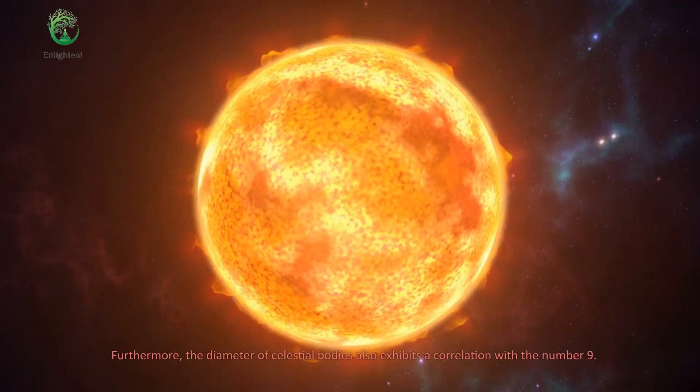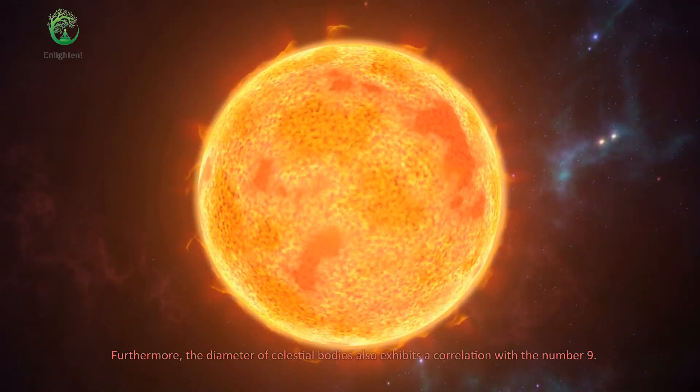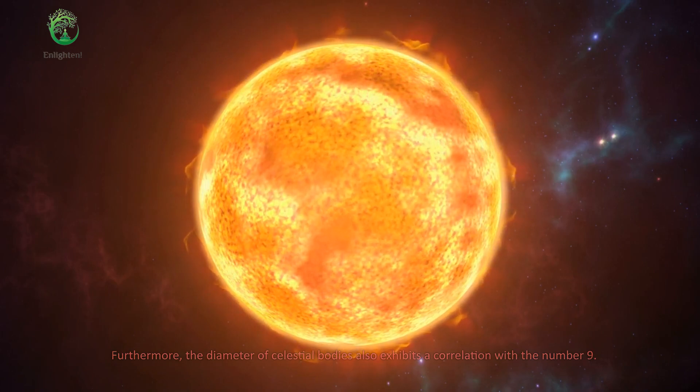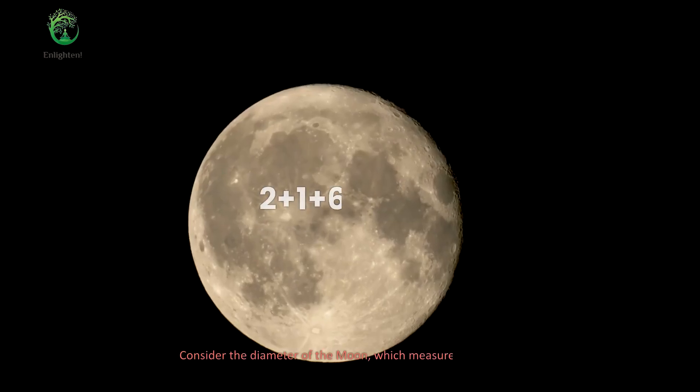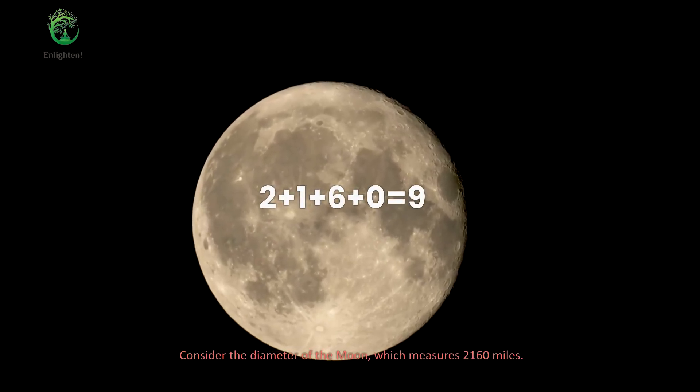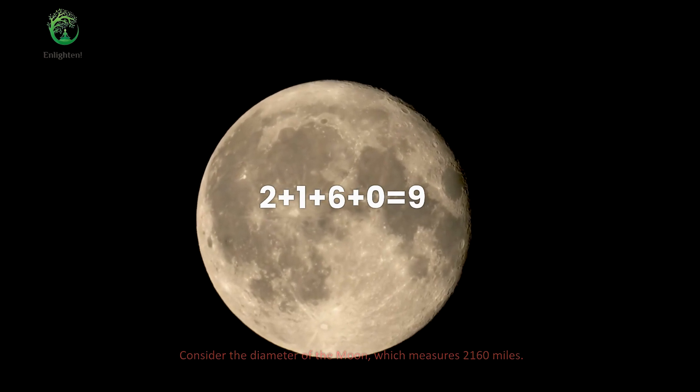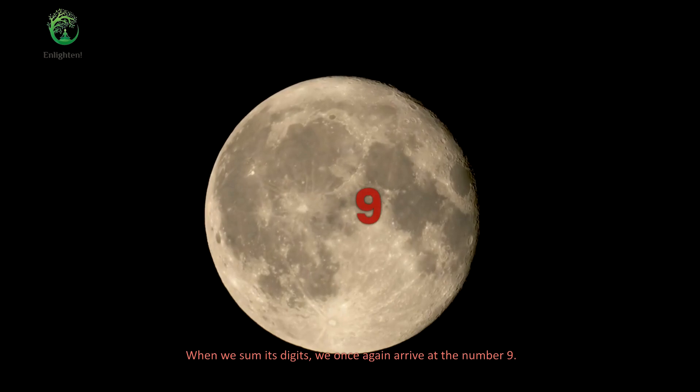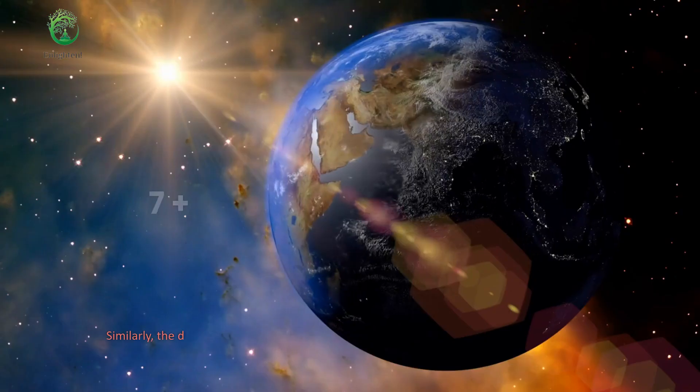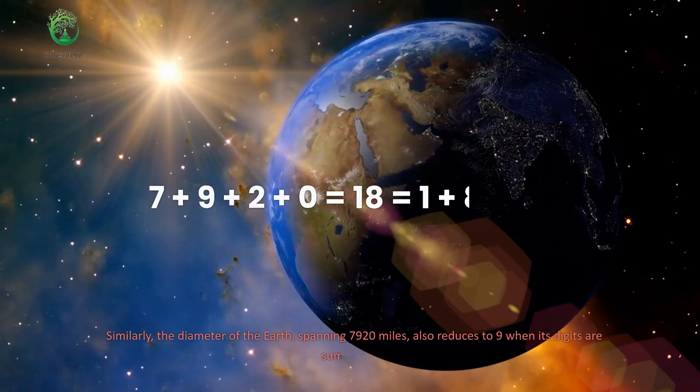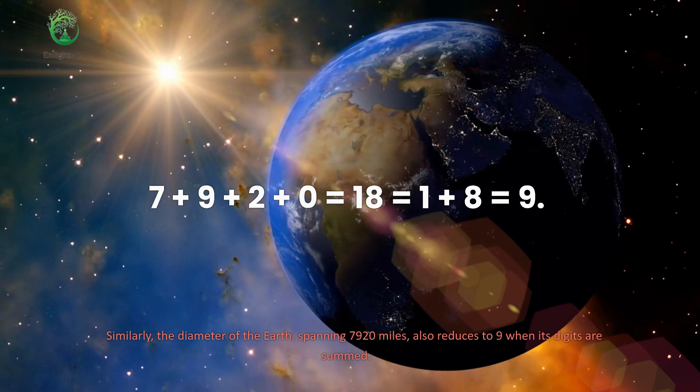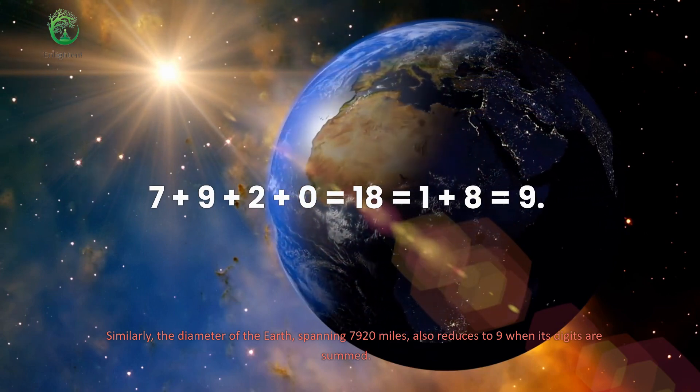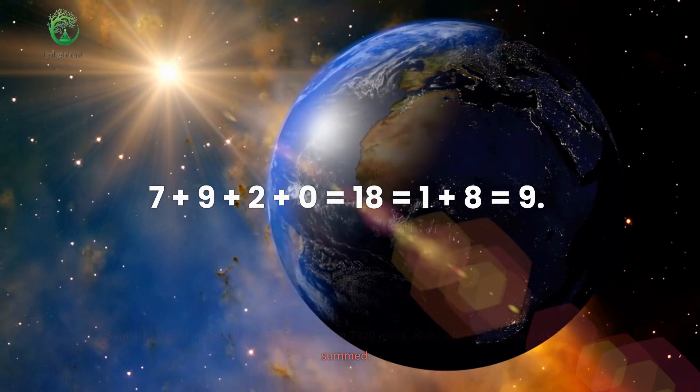Furthermore, the diameter of celestial bodies also exhibits a correlation with the number 9. Consider the diameter of the moon, which measures 2,160 miles. When we sum its digits, we once again arrive at the number 9. Similarly, the diameter of the earth, spanning 7,920 miles, also reduces to 9 when its digits are summed.